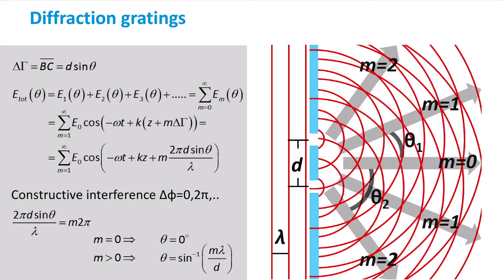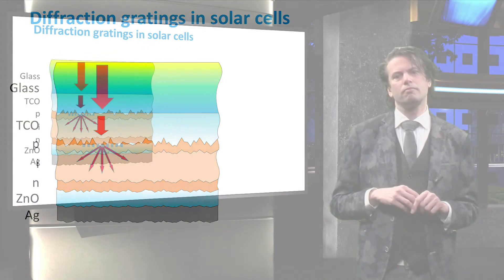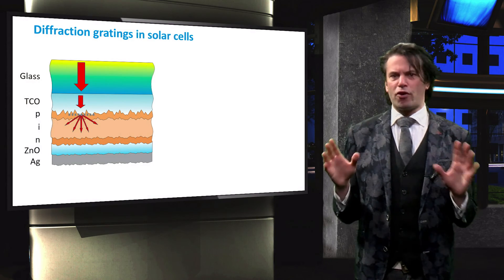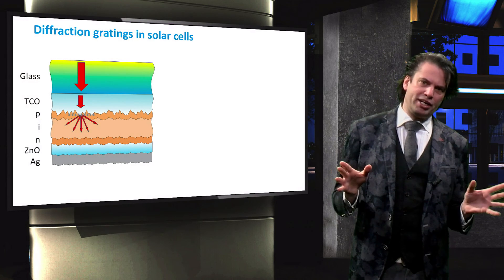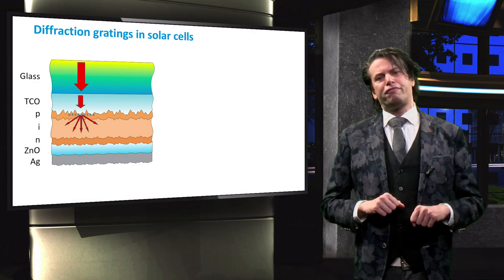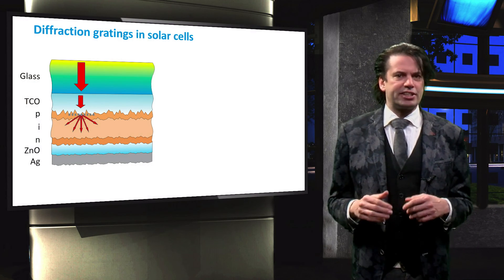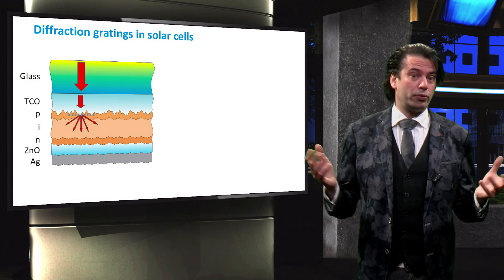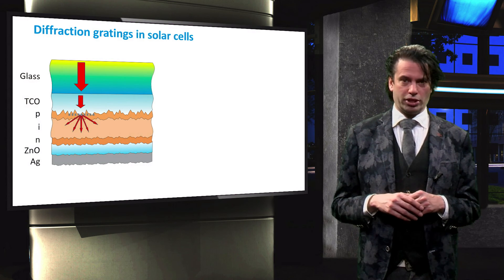Here, m is a value counting the peaks of maximal amplification starting from the normal. This is illustrated in the figure where the direction normal to the diffraction grating is indicated by m = 0. By scattering light away from the normal into large angles, diffraction gratings can be applied to increase the path length of light through the solar cell.